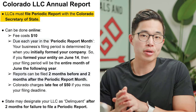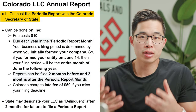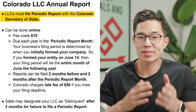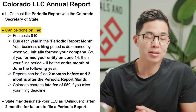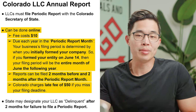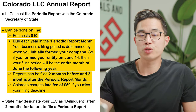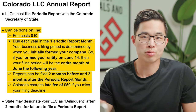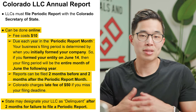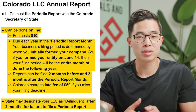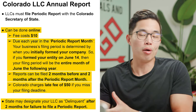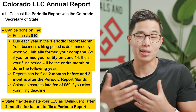You must also file an annual report called the periodic report with the Colorado Secretary of State. This can be done online and it's $10. It's very important to do this on time because there can be significant penalties — for example, having your LLC marked as delinquent if you are significantly late.